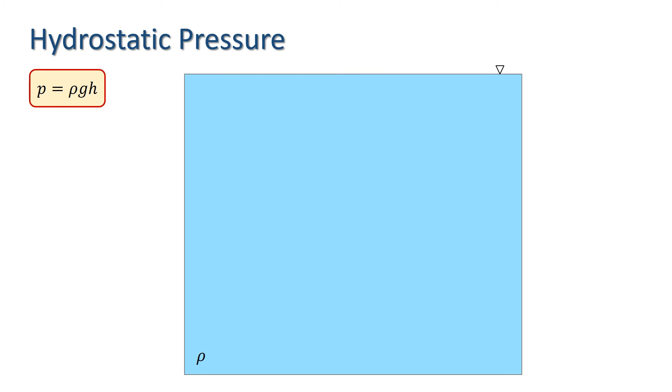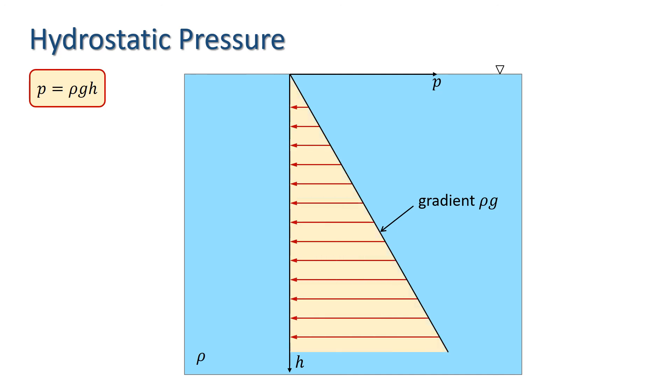Let's have a look at what the pressure distribution looks like. Since h is the vertical distance below the fluid surface, we plot the h-axis downward, and the line h equals zero corresponds to the free surface of the fluid. Plotting p horizontally, we thus have the straight line shown here, which has gradient rho G. This is often represented as a pressure diagram as shown here, where the red arrows indicate the magnitude of the pressure at a particular depth.